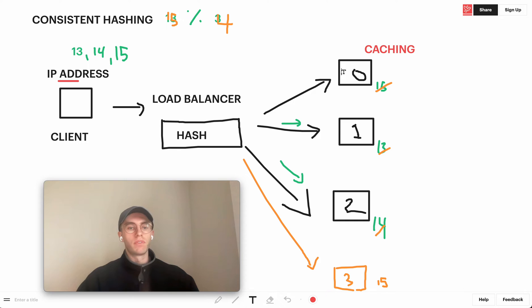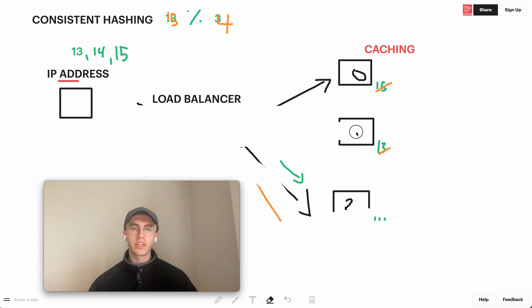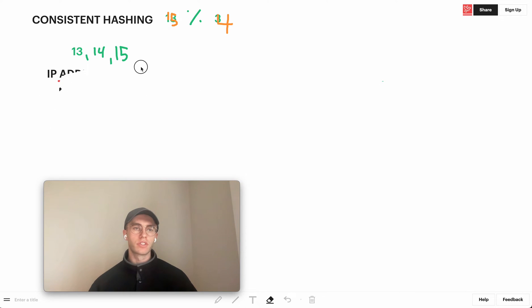Now the way that we can solve this using consistent hashing is that basically I'll show you what the outcome is and then basically how we can achieve that. Essentially what we want to overcome is that huge shuffle that we're doing so that we're not shuffling the entirety of all those objects or outcomes.